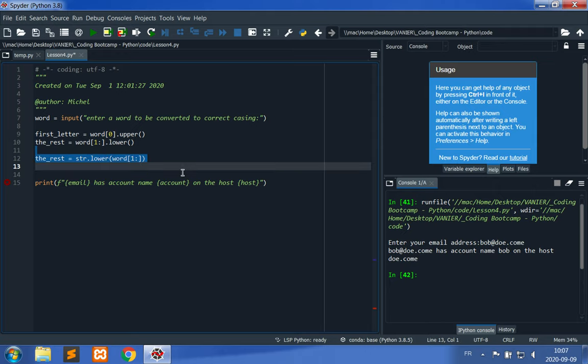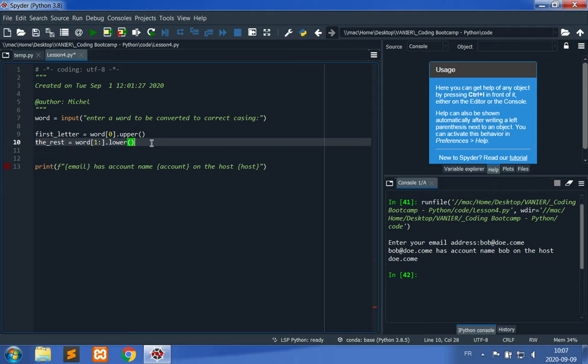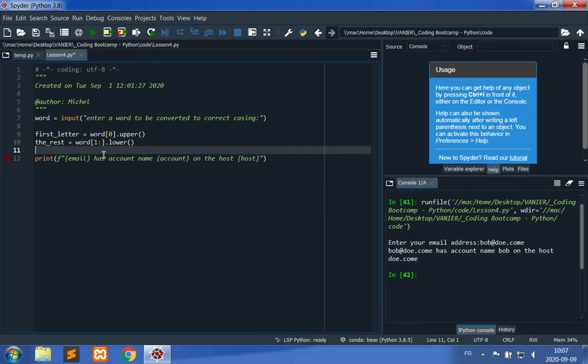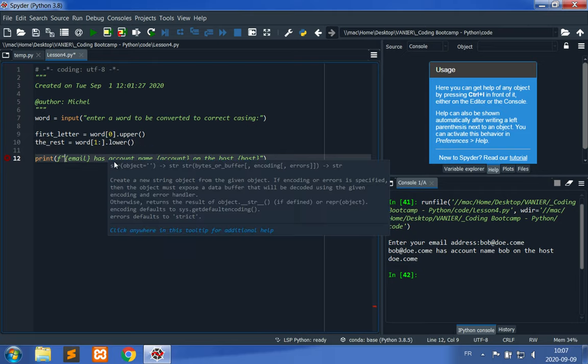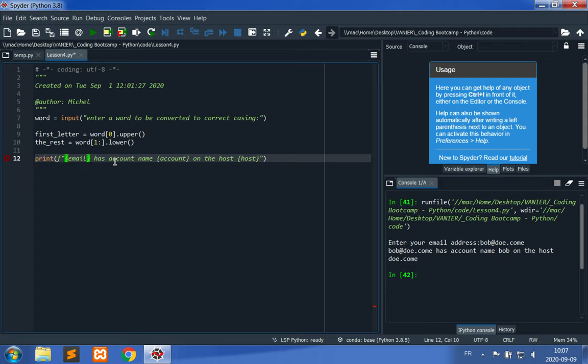But applying it as a method is more effective. Now let's output the result, so we can output first letter and then output the rest using an f-string.